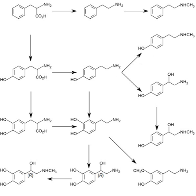Phenylethanolamine N-methyltransferase, PNMT, is an enzyme found primarily in the adrenal medulla that converts norepinephrine to epinephrine. It is also expressed in small groups of neurons in the human brain.